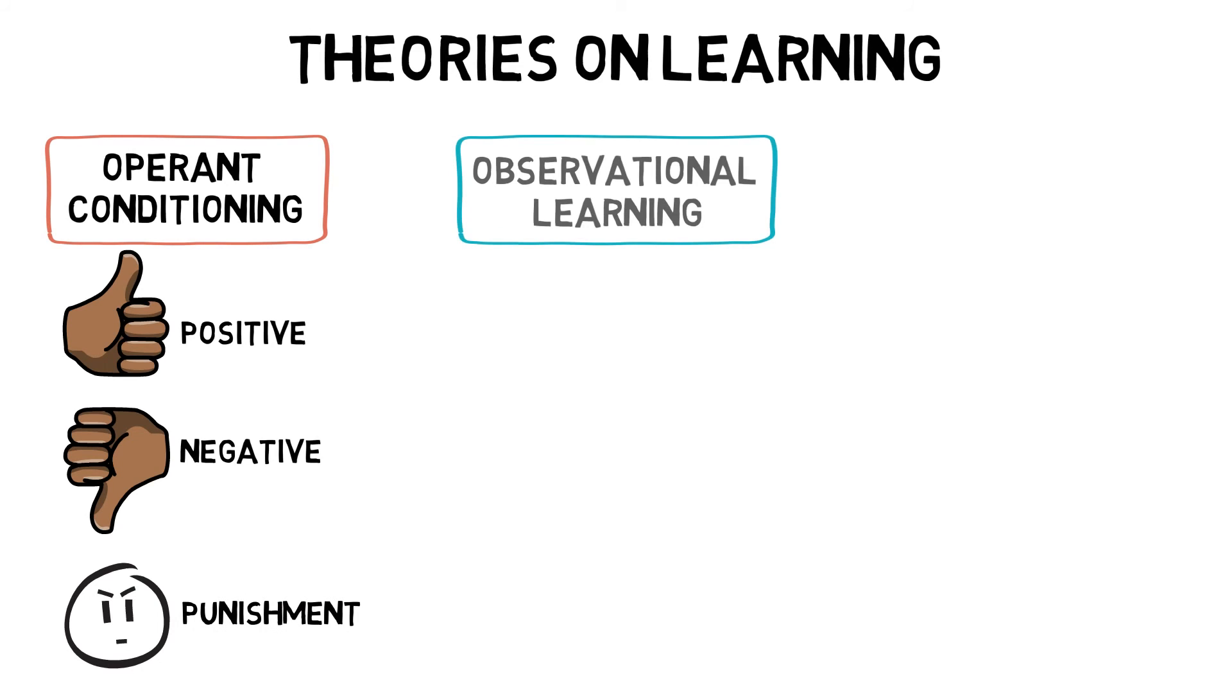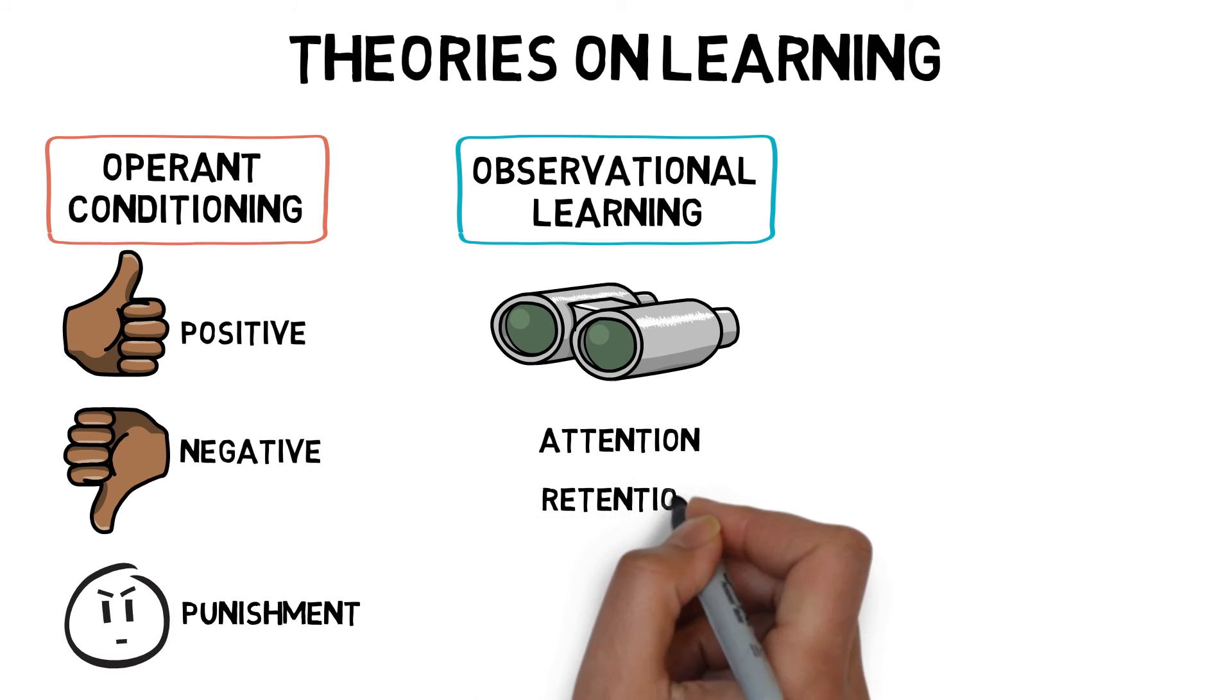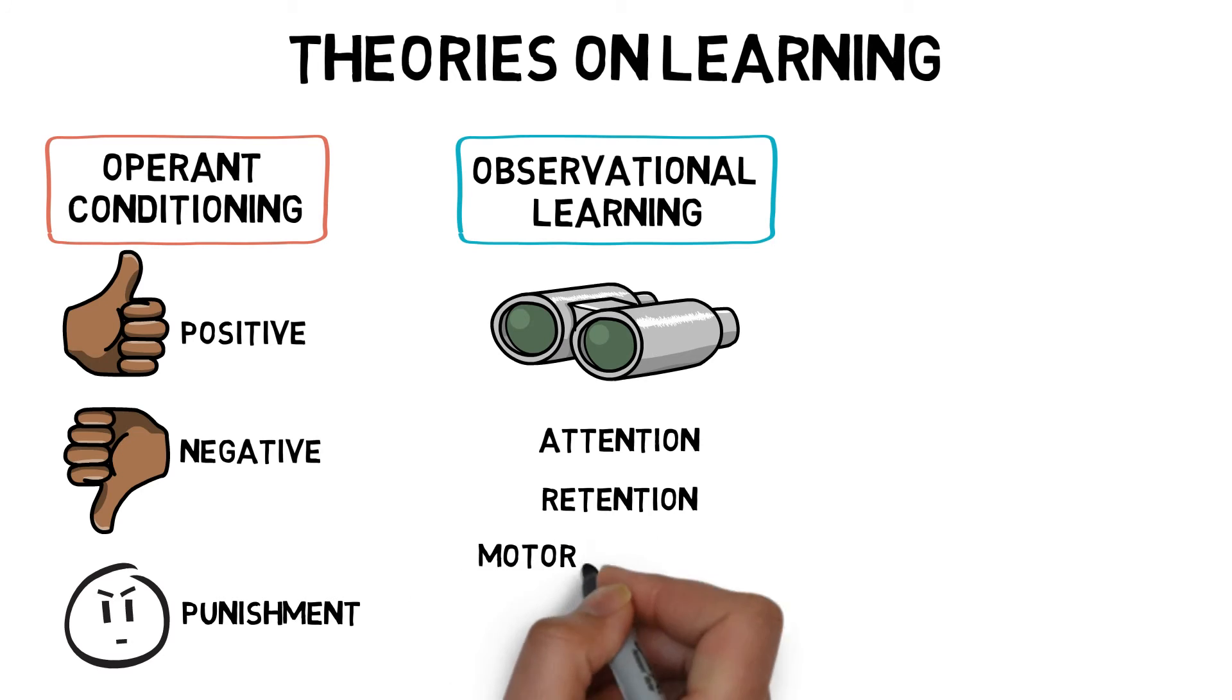Observational learning is learning through observing others by creating a mental picture of skilled movement, learning through demonstration or copying a role model. This is done via four stages: attention, retention, motor production, and motivation.